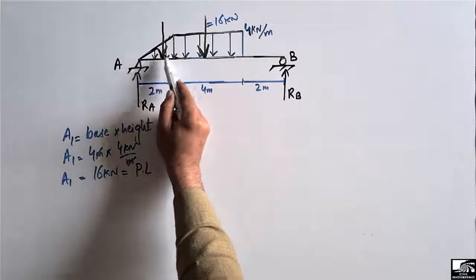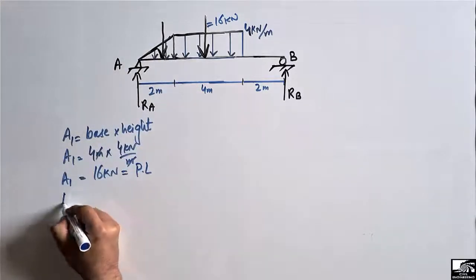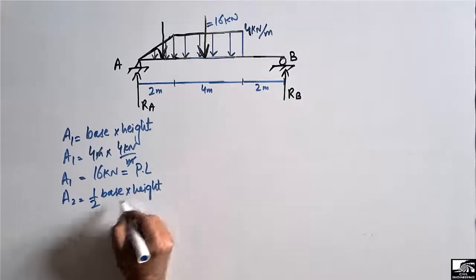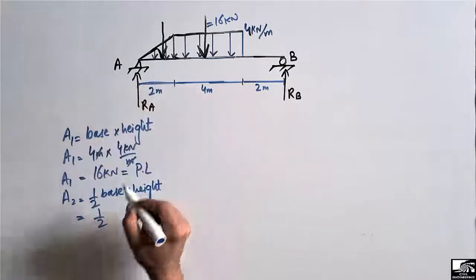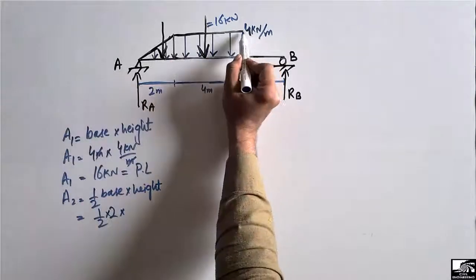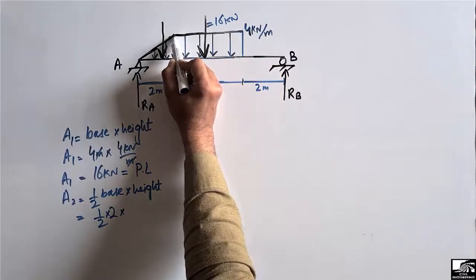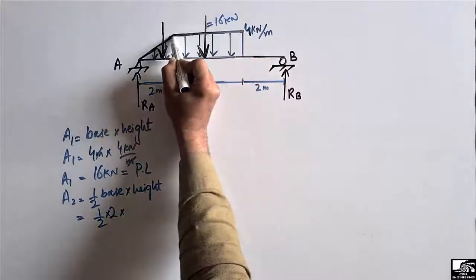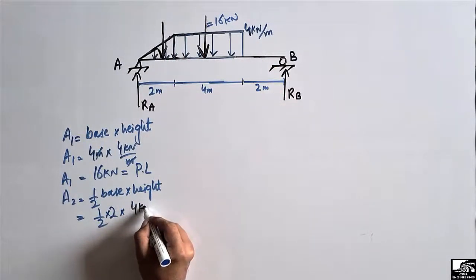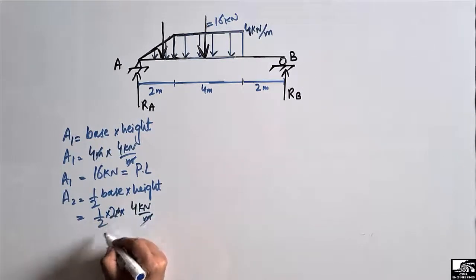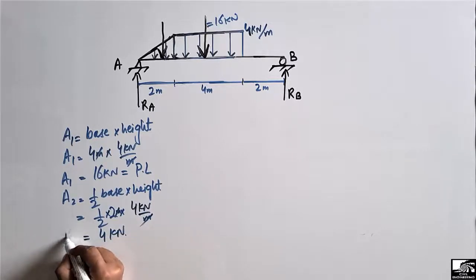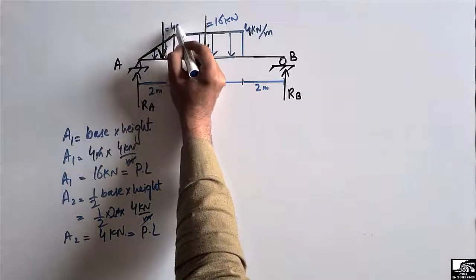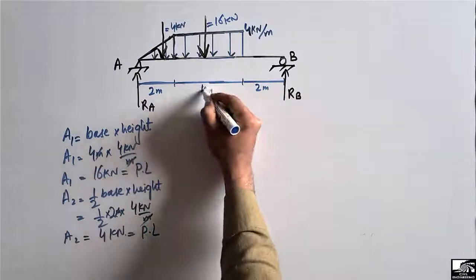Similarly, we find the point load for the triangle. A2 equals half times base times height. The base is 2 meters and the height is 4 kilonewtons per meter, so A2 equals 4 kilonewtons. This is the equivalent point load acting on the triangular load.